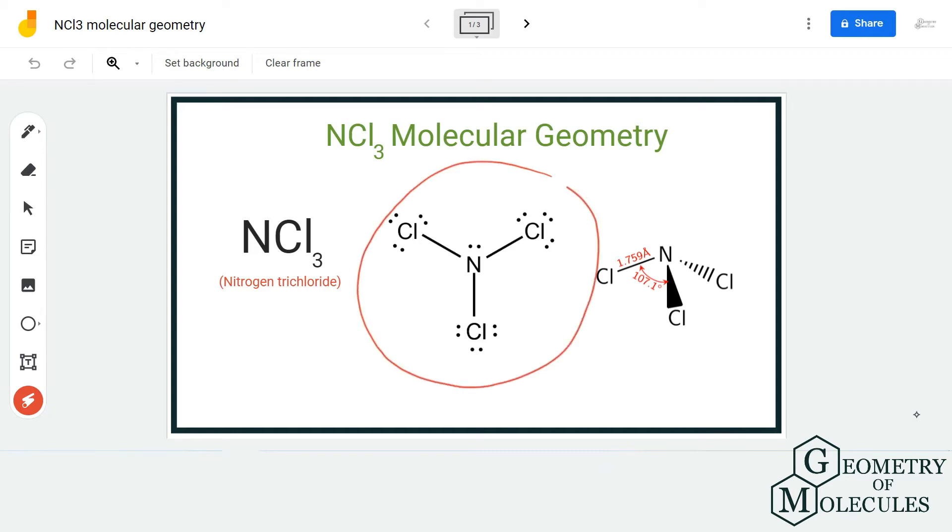Here is the Lewis structure of NCl3, in which the nitrogen atom is forming bonds with three chlorine atoms, and it also has a lone pair of electrons.